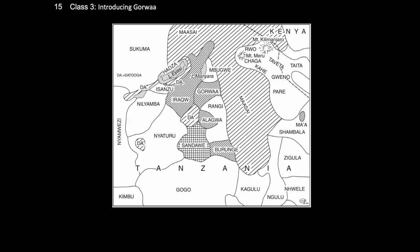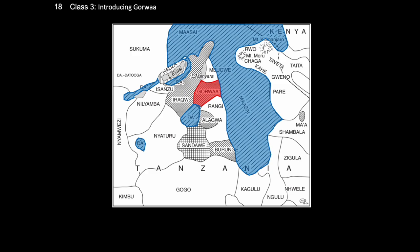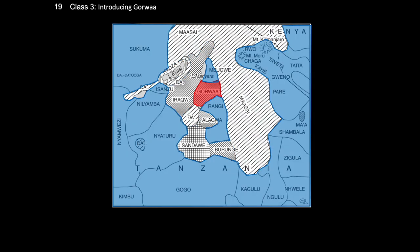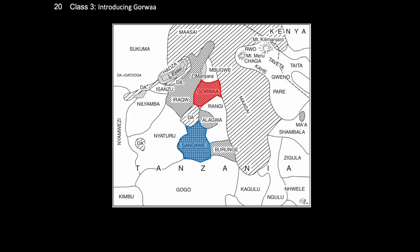Here we have a map of the Tanzanian Rift Valley. Gorwa exists at the geographical center of a highly diverse area. This includes other southern Cushitic languages — Iraqw, Alagwa, and Burunge — as well as Nilotic languages including the eastern Nilotic Maasai and the southern Nilotic Datoga varieties. Bantu languages from the Takama branch, including Ihanzu, Nilamba, and Yaturu, as well as Bantu of other affiliation including Gogo, Kilimanjaro Bantu languages, and Rangi and Mbugwe. Sandawe, which is possibly a distant member of the Khoi Khoi group of languages, is also included, as well as the language isolate Hadza.